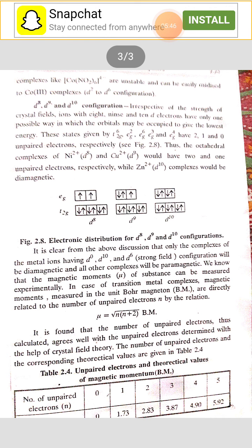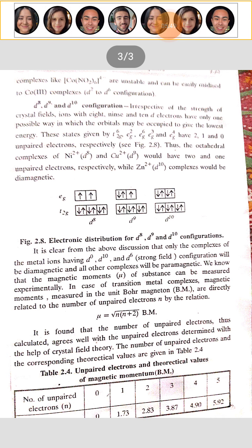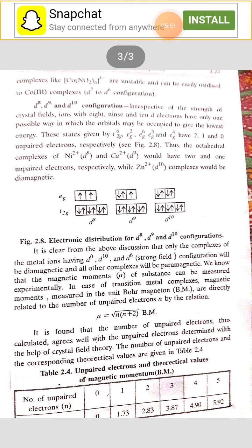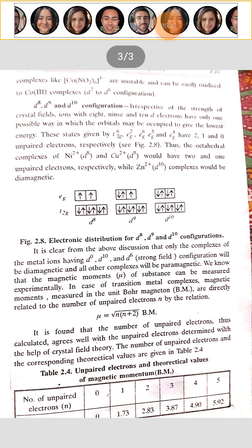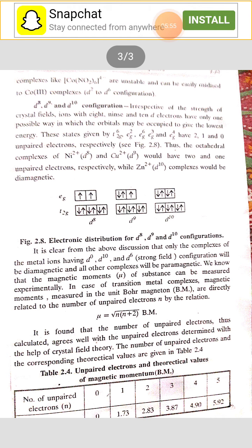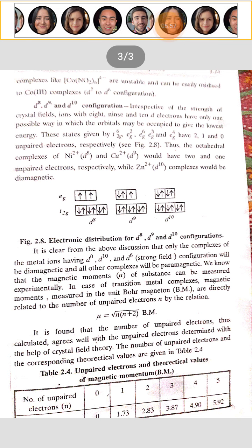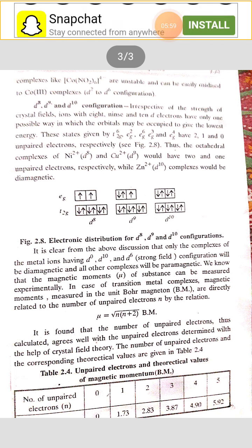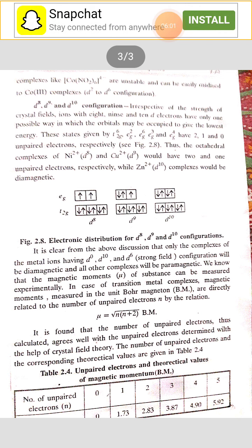After nickel, we have the next compound which is very important, that is copper. Copper has the D9 system and after the D9 system, we have zinc which has the D10 system.